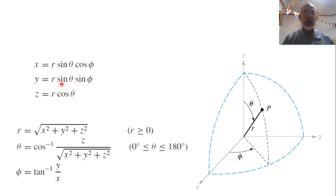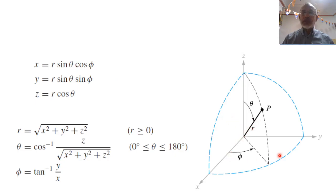So y = r sinθ sinφ. The projection of the point in spherical coordinates onto the z-axis gives z = r cosθ. These formulas convert from spherical coordinates to Cartesian coordinates. The reverse is straightforward: the value of r is the square root of x² + y² + z².